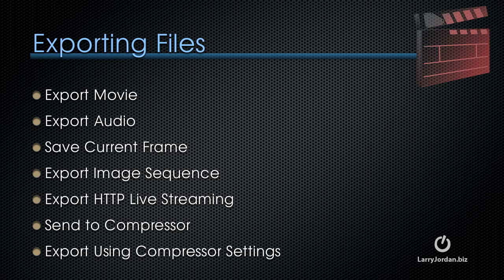The fourth category is Exporting Files. We can export a movie, export an audio file, save the current frame, export an image sequence, export for HTTP live streaming, send to Compressor, or export using Compressor settings. Export Movie will be covered later in this chapter. Save Current Frame was covered when we worked with still frames earlier in this training, and the Compressor options will be reserved for a later training on Compressor.